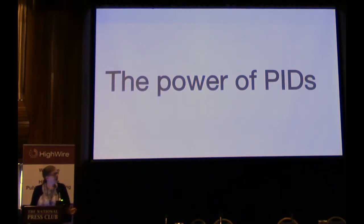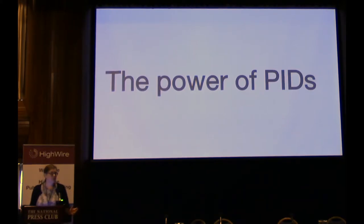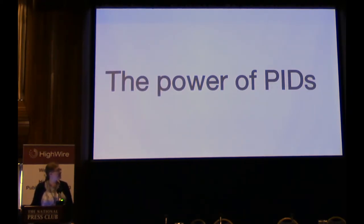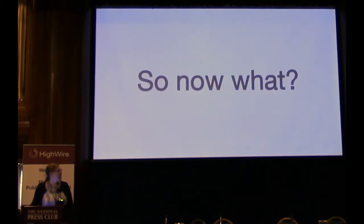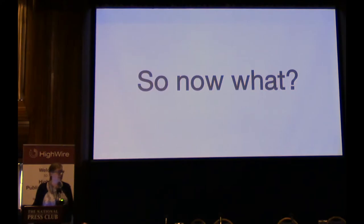Identifiers do more than identify. They locate, they can verify, they can make connections through persistent identifiers — it's not just the identification part, but it's in the metadata behind it. So we've done all this work. We have Crossref DOIs. We have ORCIDs for authors. What's the next step?